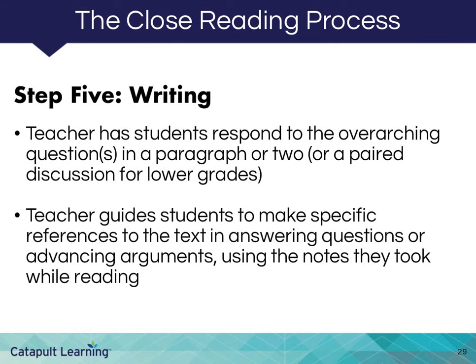The final step of the close reading process is to get students to write. Having had the support of detailed annotation and note-taking, followed by group or class discussion, students are in a perfect, confident position to address the overarching, big-picture question in a paragraph or two. Students can connect their ideas and positions to real evidence from the text, using their notes to quote directly from the text and explain the importance and meaning of that evidence. As students become more proficient at close reading, teachers may decide to spend less time in class discussions and move students directly into the independent writing stage.